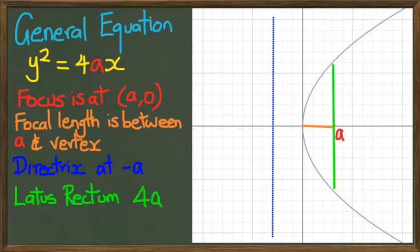The distance of that length is 4a. The coordinates where I've just marked that first point is going to be at (a, 2a). On the opposite end it's going to be (a, -2a).